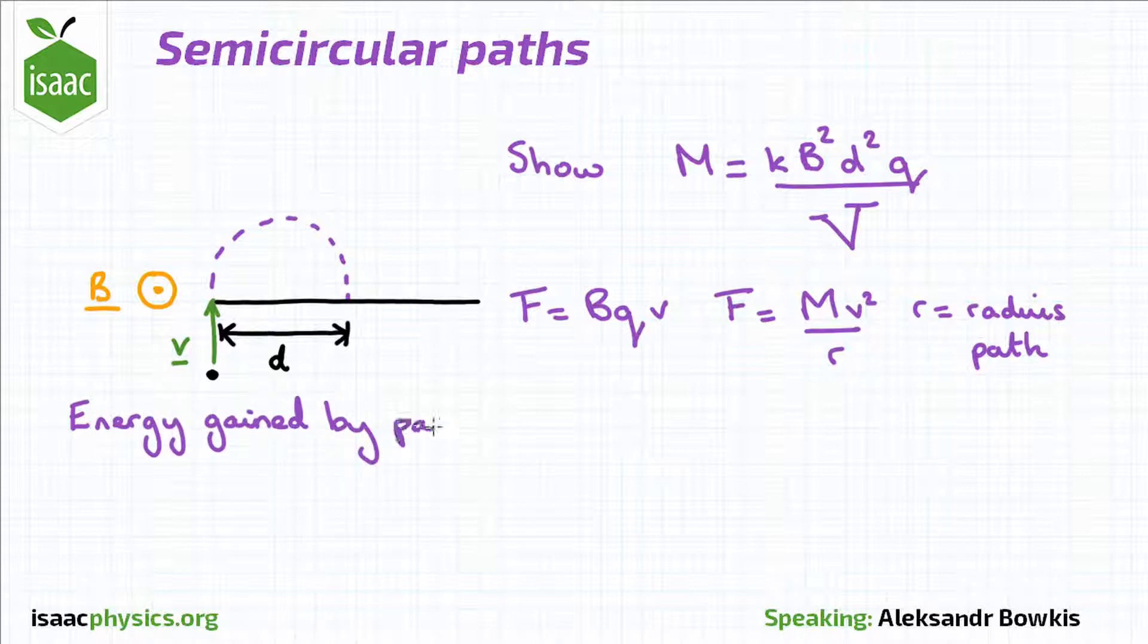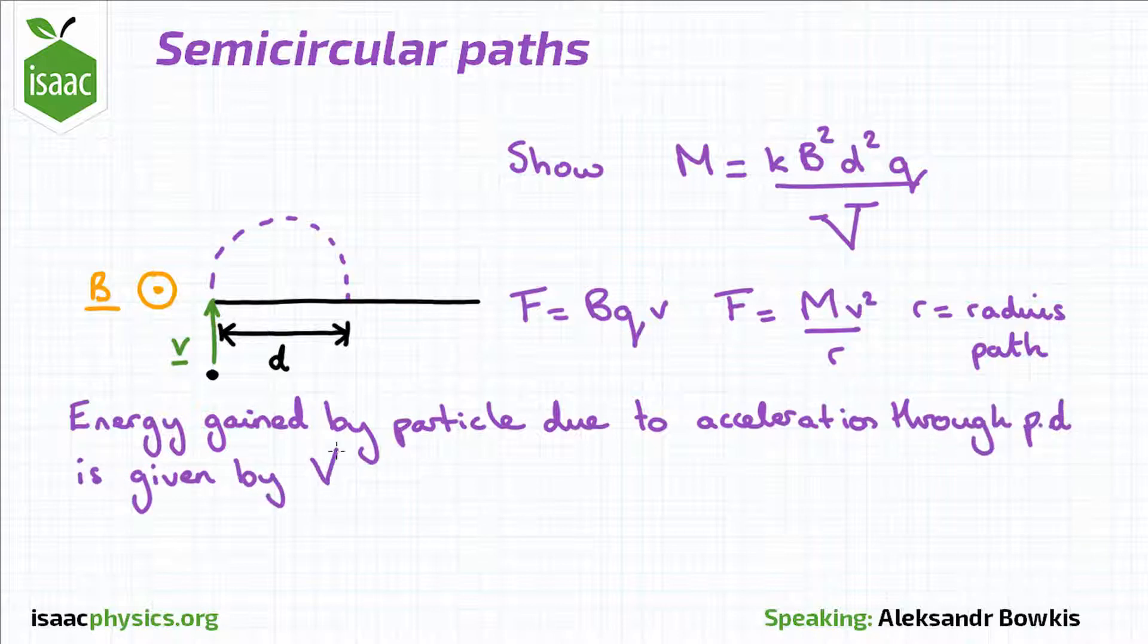The energy gained by the particle as it is accelerated by the potential difference is given by vq, where v is the potential difference. The kinetic energy the particle has when it reaches the region containing the magnetic field is given by half mv squared.